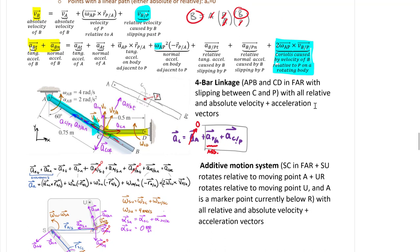That wraps up the last section, 16.8, on slipping between moving bodies and rotating axis systems. I hope this helps knit together the very complex and challenging chapter of rigid body kinematics for dynamics — I think it's actually the hardest chapter we cover in this class. I applaud you for all your hard work. Let me know if you have any questions.